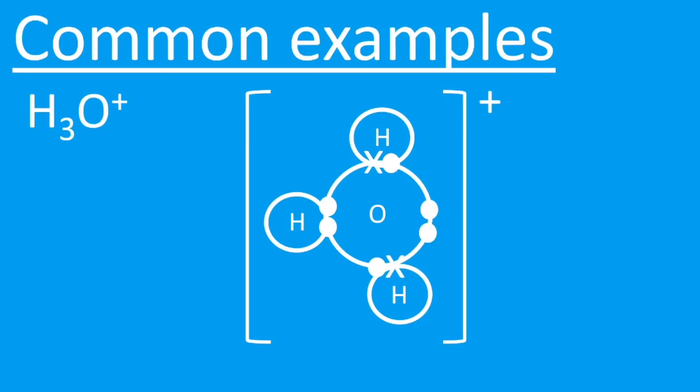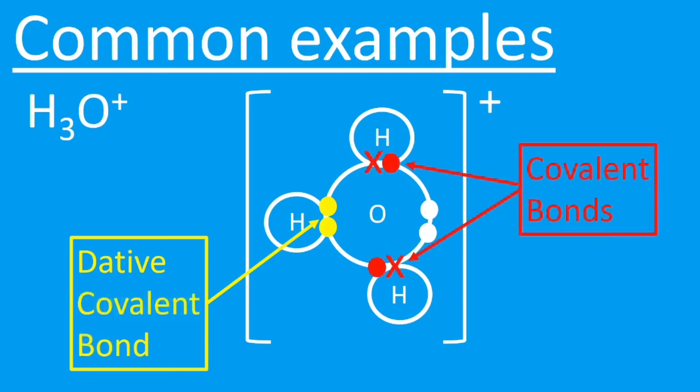A dative covalent bond is being formed when there's a lone pair of electrons from the oxygen going into the hydrogen. There's our dative covalent bond, and the other two bonds on the water would just be classed as regular covalent bonds—there's one electron from each atom, you can see there.